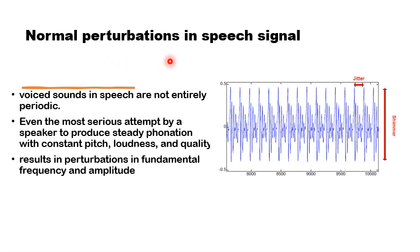Perturbations can occur normally during speech; voice sounds in speech are not always entirely periodic. Even the most serious attempt by a speaker or a singer to produce steady phonation — like a sustained vowel — would end up with some tiny changes in the frequency and amplitude of the glottal cycles, producing a certain amount of jitter and shimmer. It is only when this exceeds a certain threshold that they become noticeable and pathological.